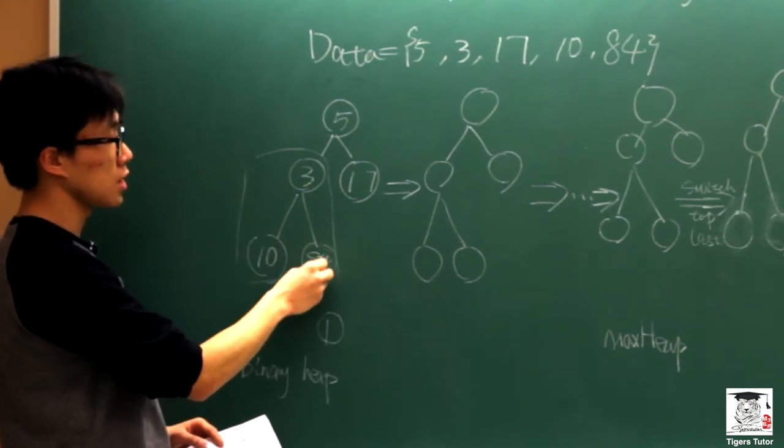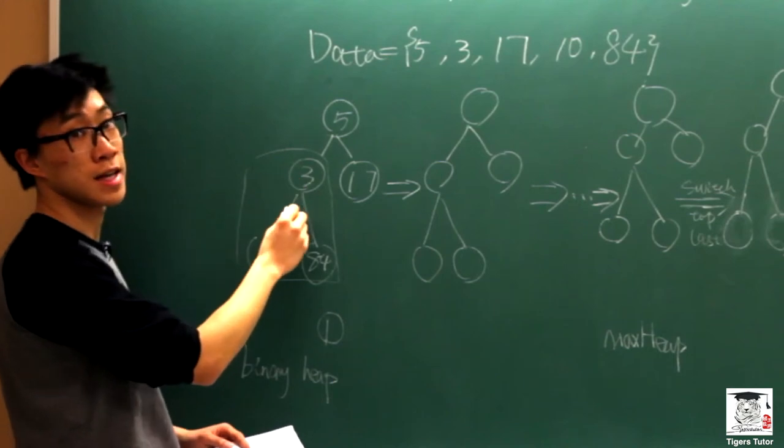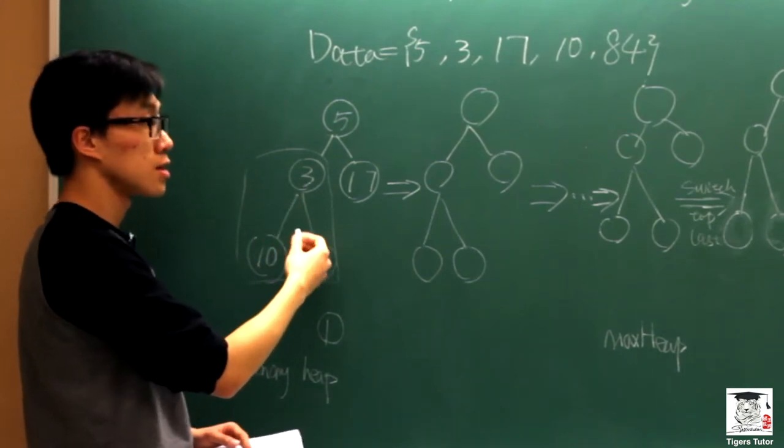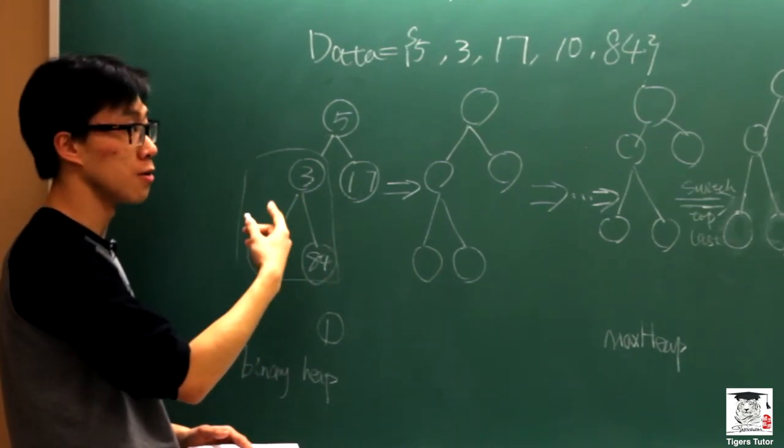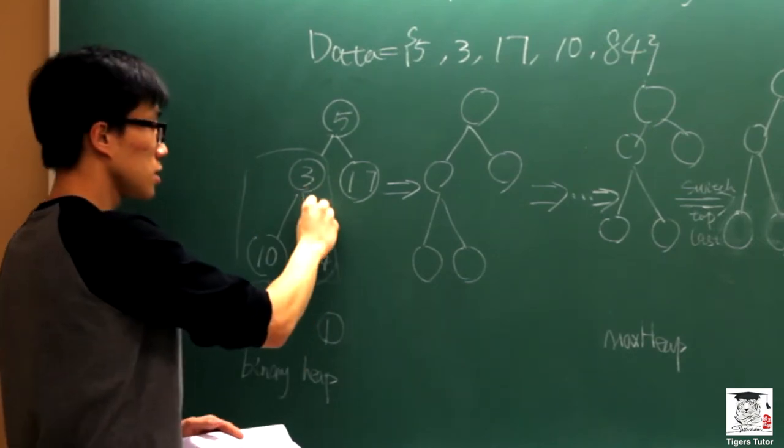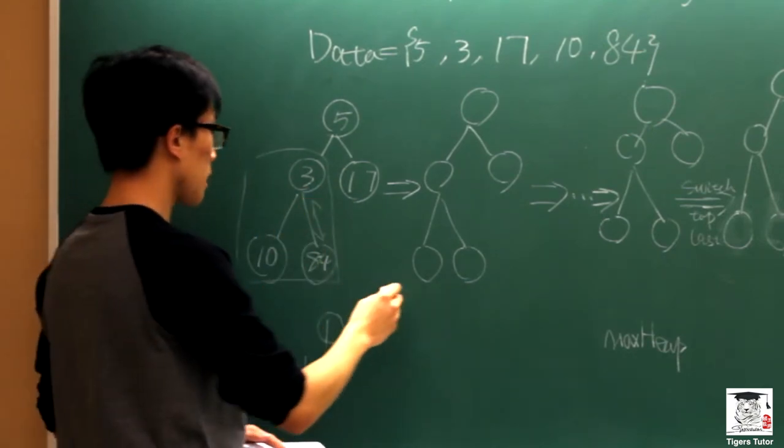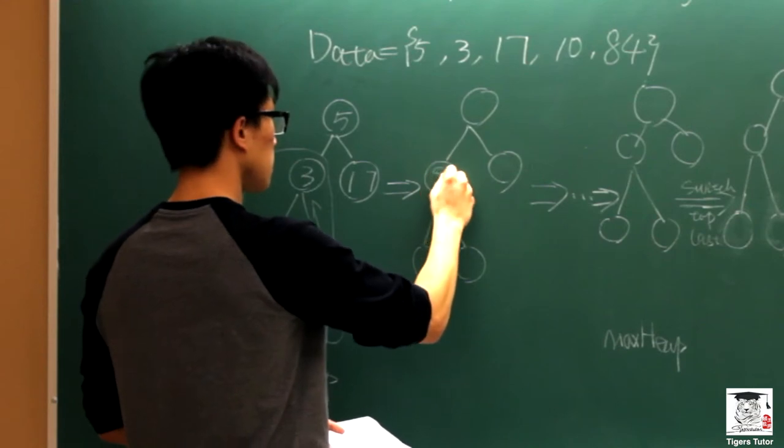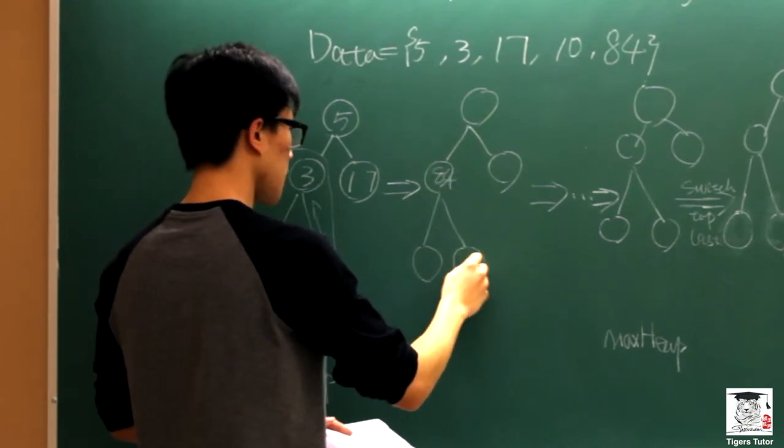As we can see here, the child is greater than the parent, which violates the characteristic of max heap. So we switch these two elements. And then we can have our binary heap like this.